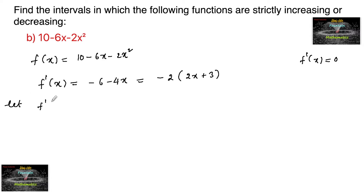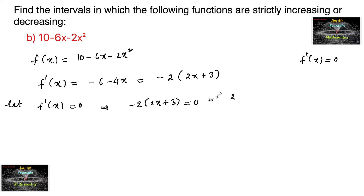Let f dash of x equal to 0, which implies minus 2 of 2x plus 3 equals to 0, which implies 2x plus 3 equals to 0. So we get x is equal to minus 3 by 2. At x equal to negative 3 by 2, we get f dash of x equal to 0.